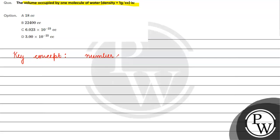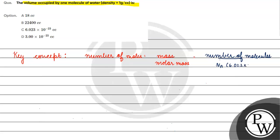Number of moles is basically equal to mass by molar mass, and it is also equal to number of molecules divided by Avogadro's number, which is 6.022 × 10²³ mol⁻¹.